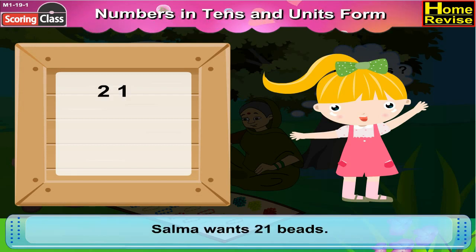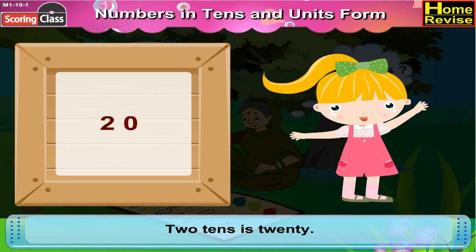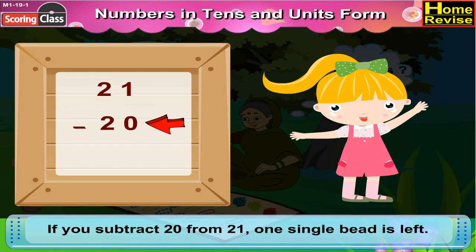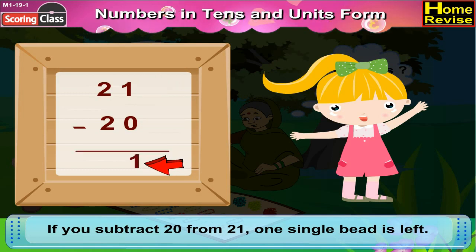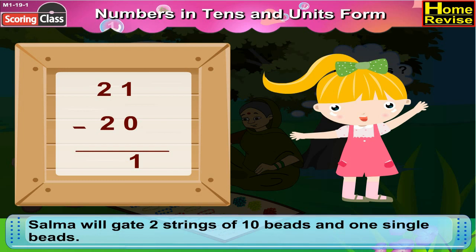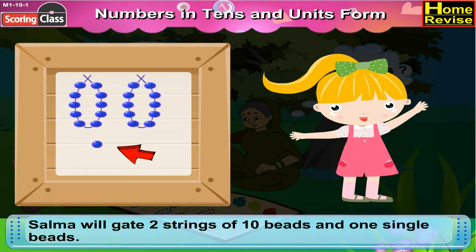Salma wants 21 beads. As you know, 2 tenths is 20. So, if you subtract 20 from 21, one single bead is left. So, Salma will get 2 strings of 10 beads and 1 single bead.